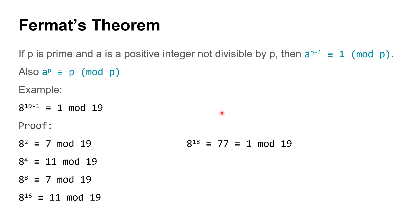We need to prove LHS equals RHS. We divide 8 to the power 18 into smaller powers. First, 8² = 64 mod 19 = 7. So 8⁴ = 7×7 = 49 mod 19 = 11. Then 8⁸ = 11×11 = 121 mod 19 = 7. And 8¹⁶ = 7×7 = 49 mod 19 = 11. Now, 8¹⁸ = 8¹⁶ × 8² = 11×7 = 77. 77 mod 19 = 1. So LHS equals RHS, and Fermat's theorem is verified.